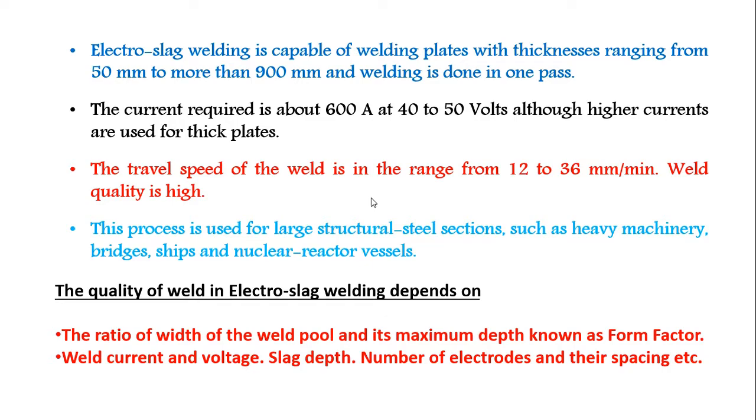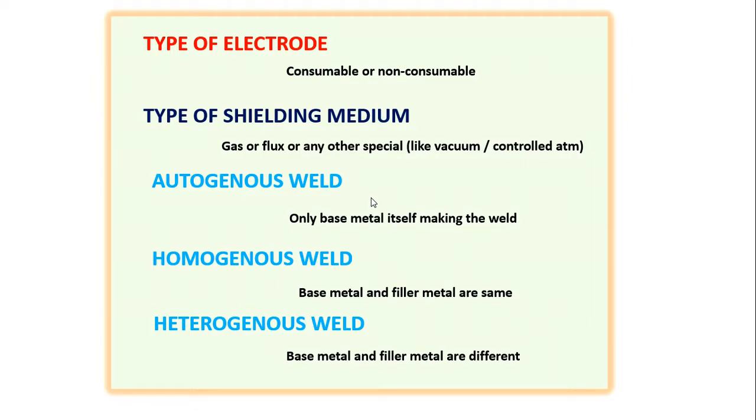Additionally I made two more items here - type of electrode. Whenever you study about the welding process, you should know about these five things. First, type of electrode - whether we are using consumable electrode or non-consumable electrode. In this process we are using consumable electrode because we are continuously feeding the electrode to the welding portion.